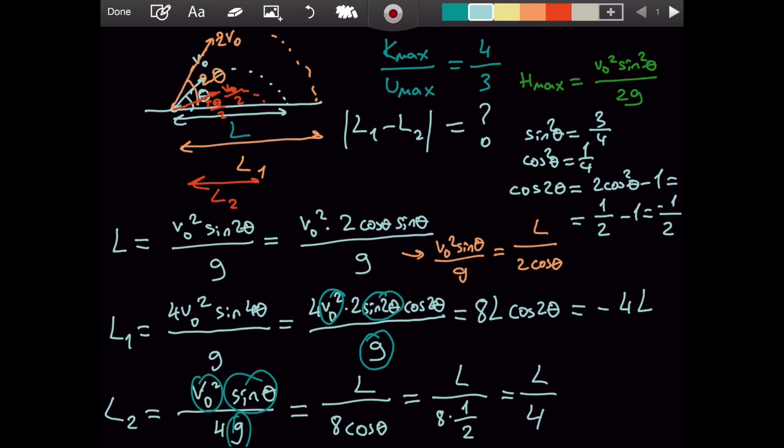And so the distance between them will be, since they have opposite signs, we will add their magnitudes. So 4L plus L over 4, that is 17 over 4L. Which is the answer to our question.